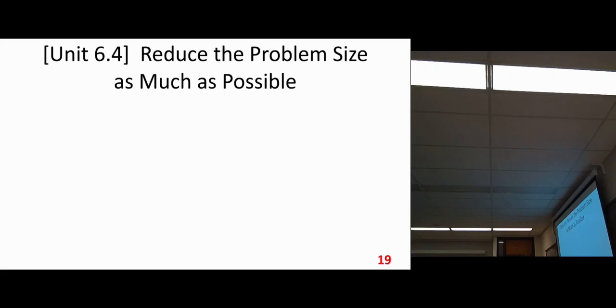Next question, next unit, unit number four: reduce the problem size as much as possible. That's another technique because we want to solve the problem as fast as possible. When we do divide and conquer, we want to reduce the problem size as much as we can. So that's the greedy algorithm, we also call greedy algorithm. Some kind of greedy idea, greedy thinking.